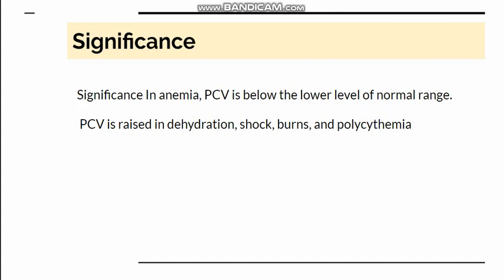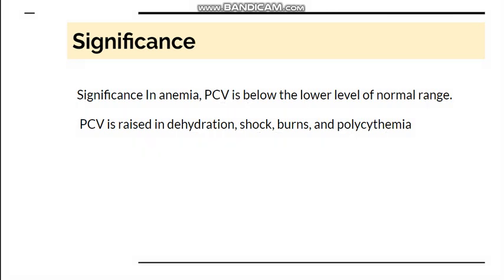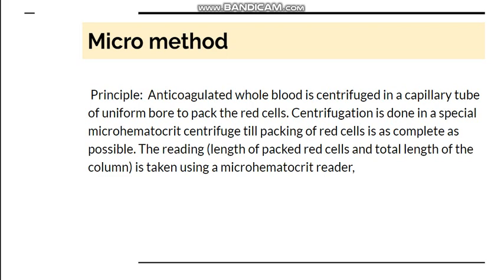Regarding the significance of PCV: in anemia the PCV will be lower. PCV can be increased when plasma volume is decreased, such as in dehydration, shock, and burns, and also when RBC count is increased as in polycythemia. The significance of PCV is therefore greatest in anemias, polycythemia, and other disorders of red blood cells.